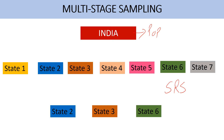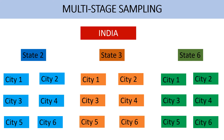Then here comes the role of multi-stage sampling. When I divide my clusters into sub-clusters and again into sub-clusters till the time I reach my desired sample size, this is called multi-stage sampling. This is not my desired sample size, so I divide these clusters into further sub-clusters. Here I have State 2, State 3, and State 6 as three clusters in my sample.